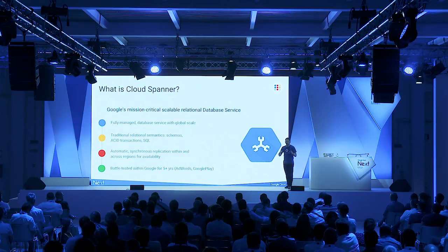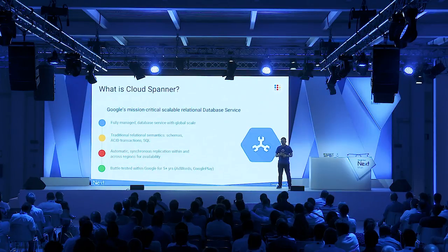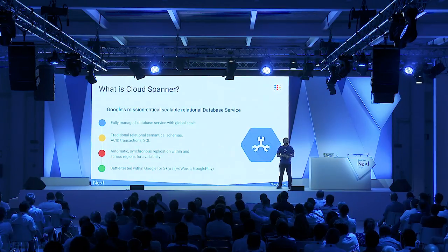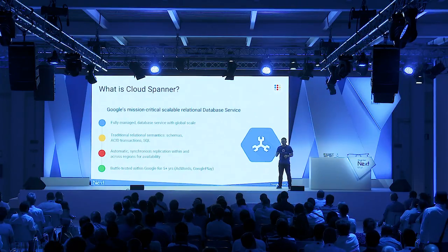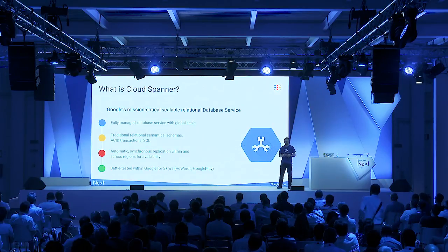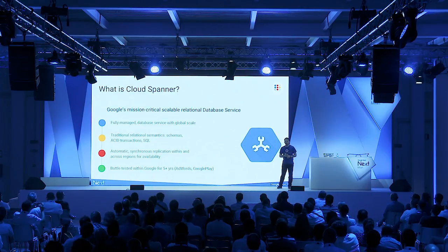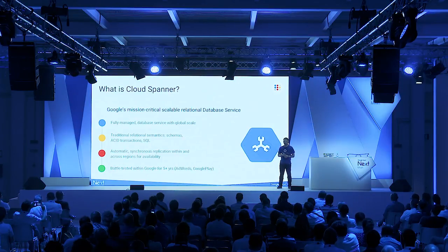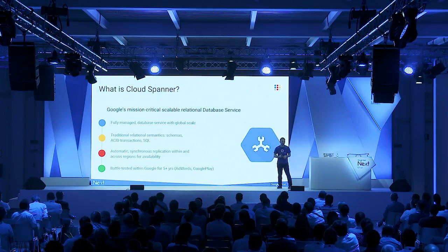For regional setups we provide four nines of availability, which boils down to about four minutes and 38 seconds of unavailability per month. Later this year we will support a multi-regional setup that can span the globe, where you get five nines of availability — basically about 26 seconds per month of unavailability that we guarantee.